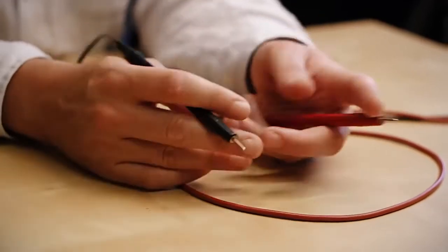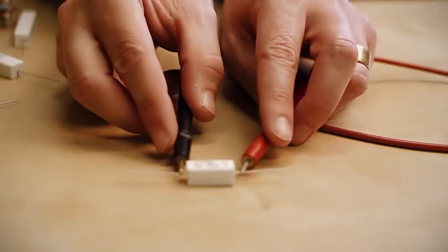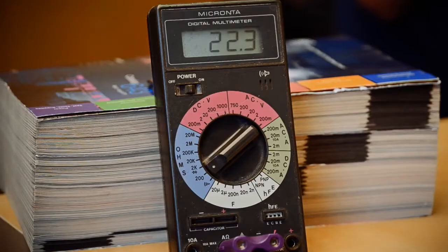When measuring a 22-ohm resistor, you'd want to use the 200-ohm scale. Measuring on 200 ohms, you read 22.2.